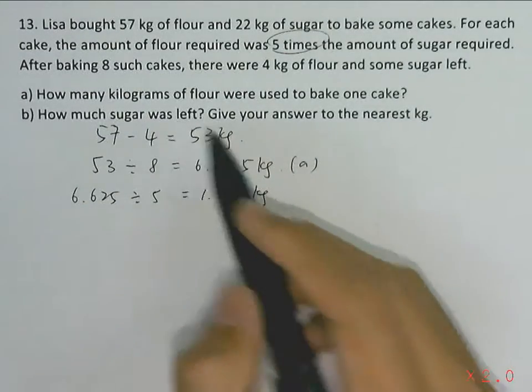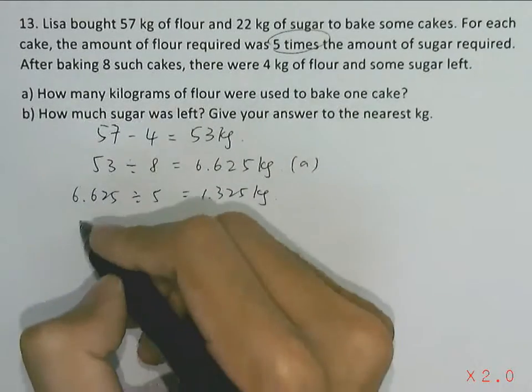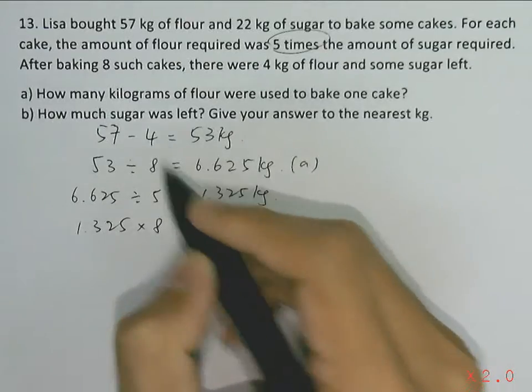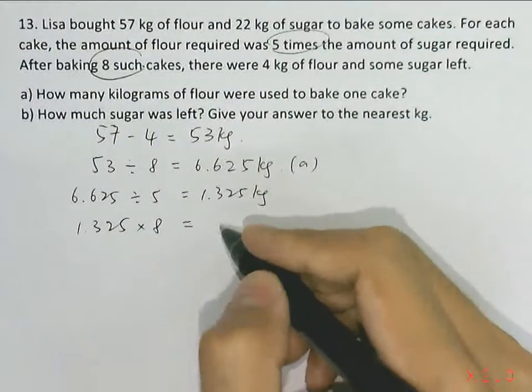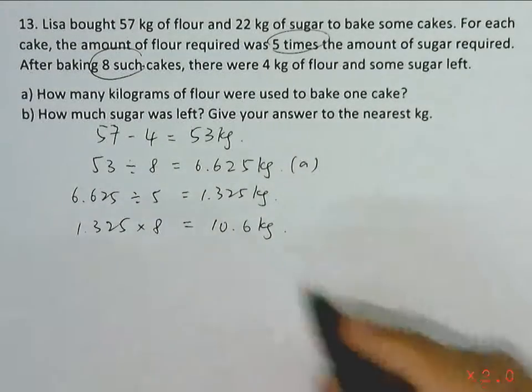To find how much sugar was left, we must find the total amount of sugar used for all eight cakes. We take the amount of sugar required for each cake, 1.325, and multiply by 8. This gives us 10.6 kilograms of sugar used.